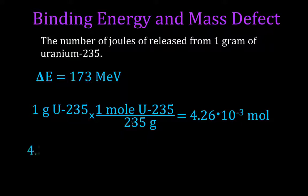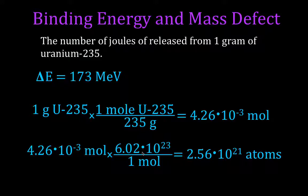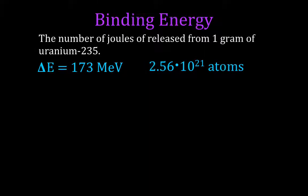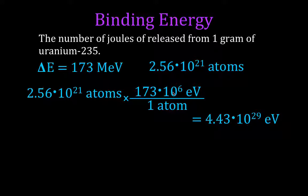That's the number of moles, but we need the number of particles. We know 1 mole equals 6.02 × 10²³ particles (Avogadro's number). So 1 gram of uranium-235 contains 2.56 × 10²¹ atoms. Now we multiply: one reaction releases 173 × 10⁶ electron volts, and we have that many atoms. If all undergo fission, the total energy is 4.43 × 10²⁹ electron volts.